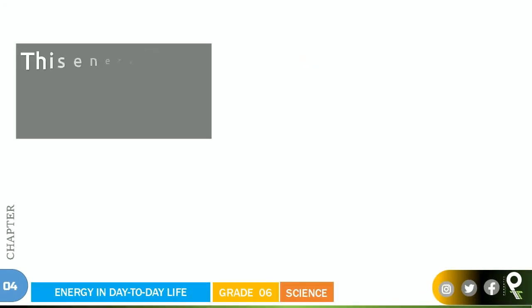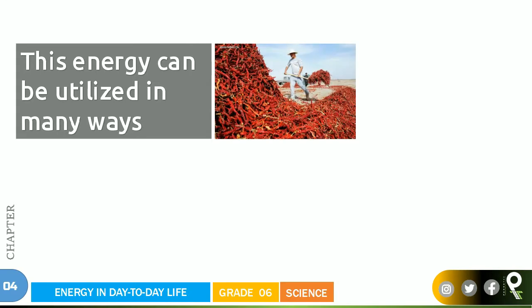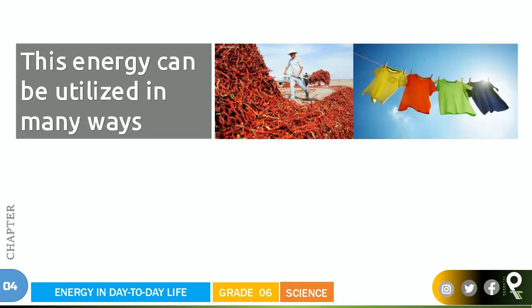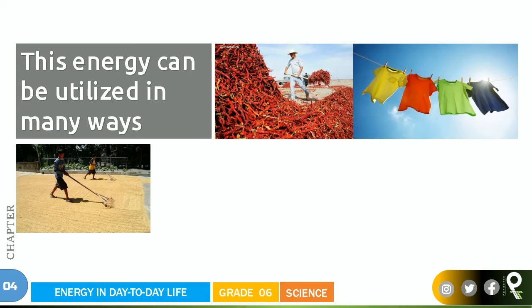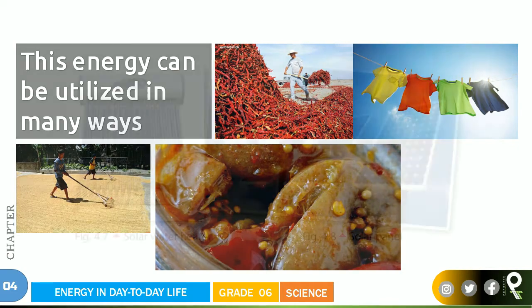This energy can be utilized in many ways. To dry the chillies, to dry the clothes, to dry the grains, and to warm the surroundings — we talk about how the solar energy, or sun energy, is utilized.